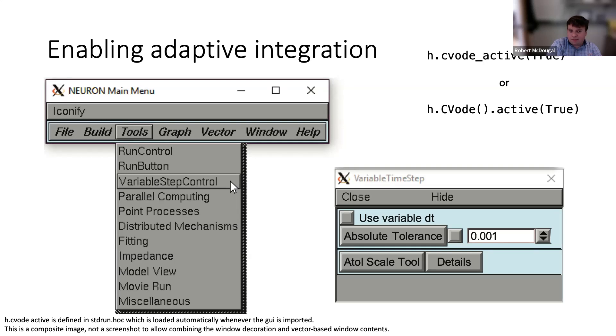Maybe I want a different value—10 to the negative 4 or 10 to the negative 6 for more accuracy, or 10 to the negative 2 if I don't care as much. If you go too far in the don't care direction, you'll run into problems. Just pop up the variable step control, specify the error tolerance, and it will pick dt's to give accurate results within that tolerance.